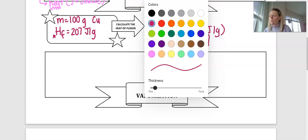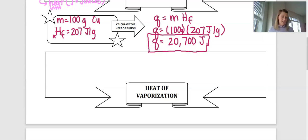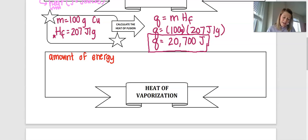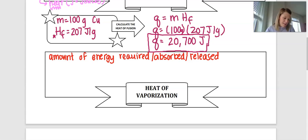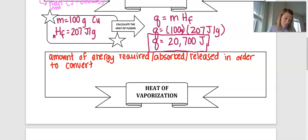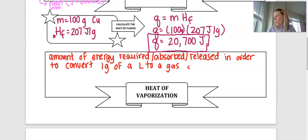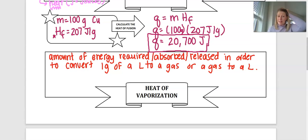What is heat of vaporization? Heat of fusion and heat of vaporization are very similar in definition — they just refer to two different phase changes. Heat of vaporization is the amount of energy absorbed or released in order to convert one gram of a liquid to a gas, or a gas to a liquid.